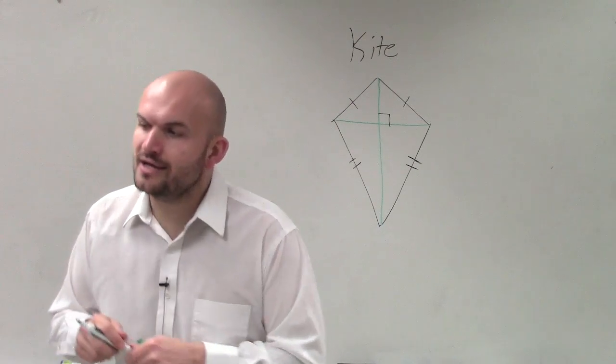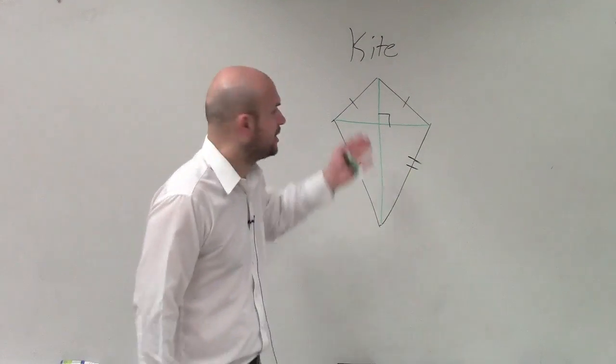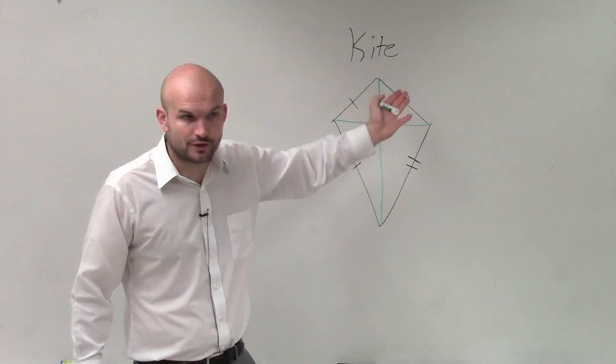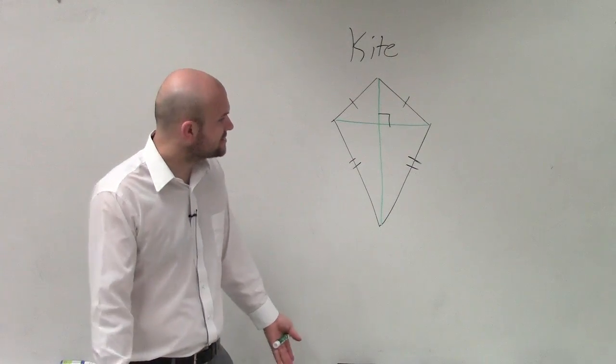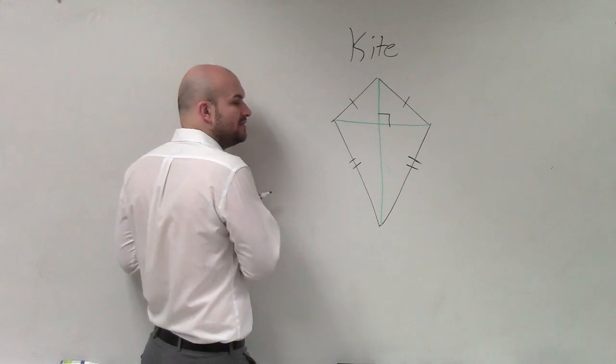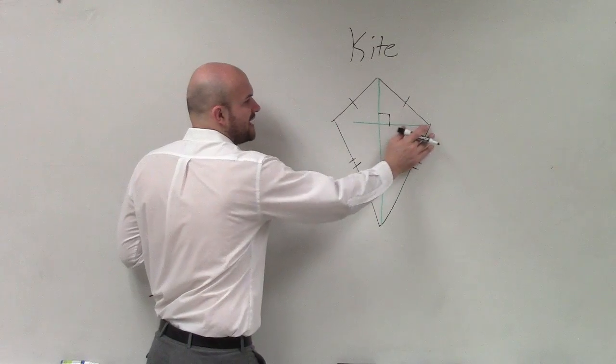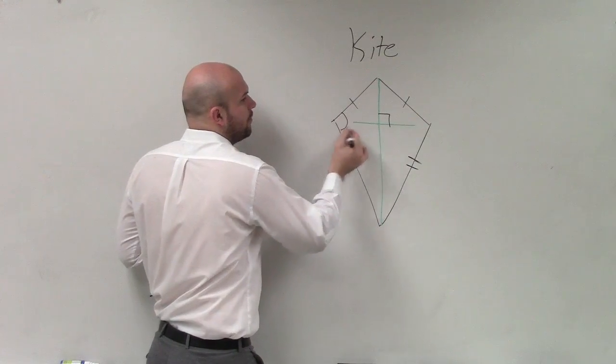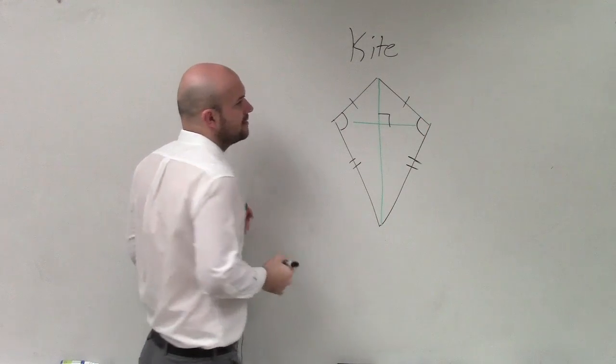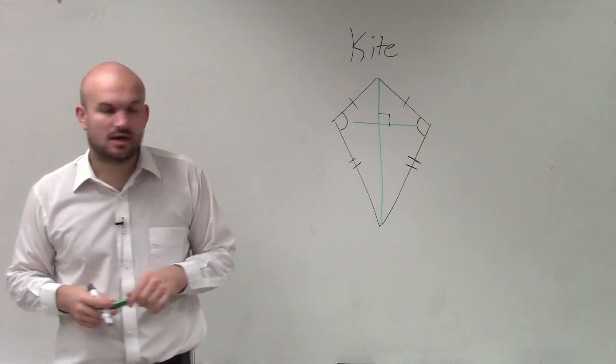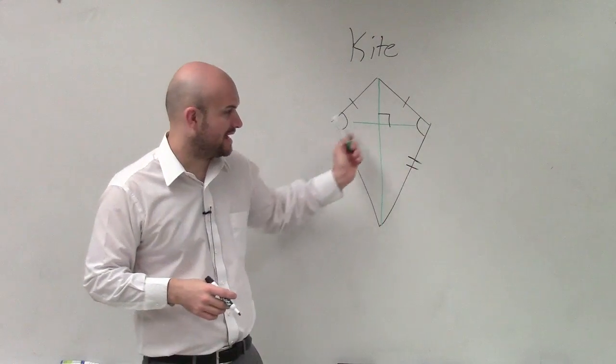It's perpendicular. Exactly. Your diagonals are perpendicular, as well as you have two sets of congruent sides. And then also, another thing that's nice about kites is you're going to have at least one pair of opposite equal, or congruent angles.